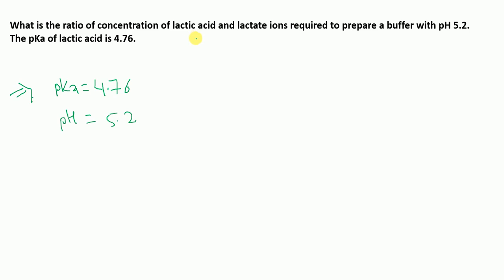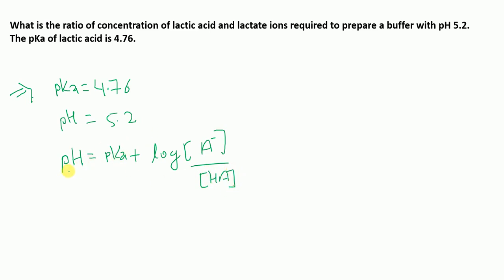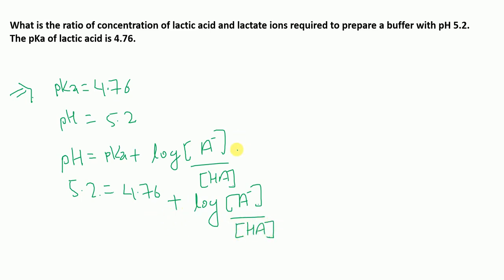To solve this, we apply the Henderson-Hasselbalch equation: pH = pKa + log([A⁻]/[HA]). Substituting: 5.2 = 4.76 + log([A⁻]/[HA]). Rearranging: log([A⁻]/[HA]) = 5.2 − 4.76.